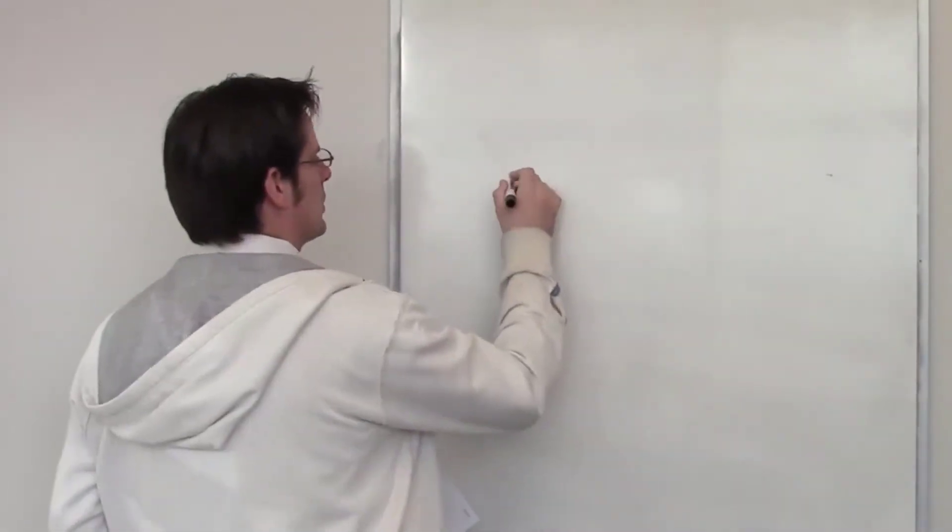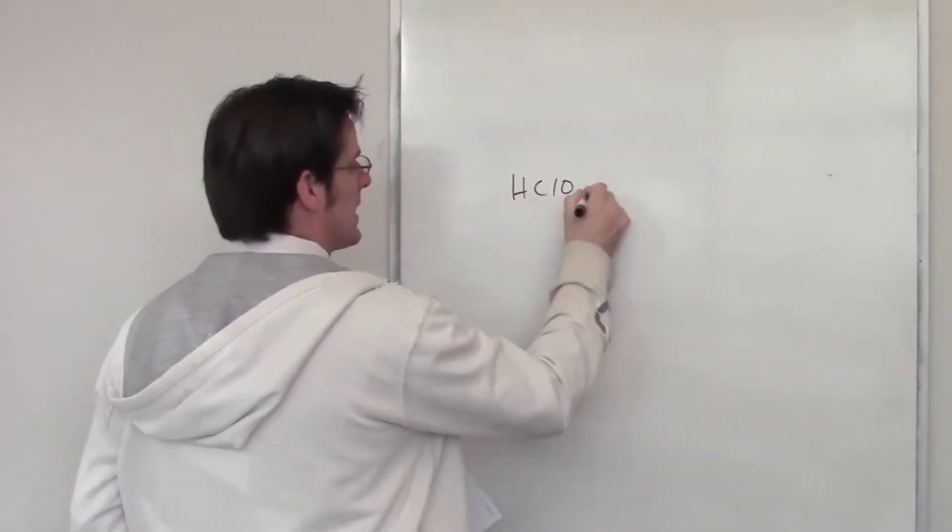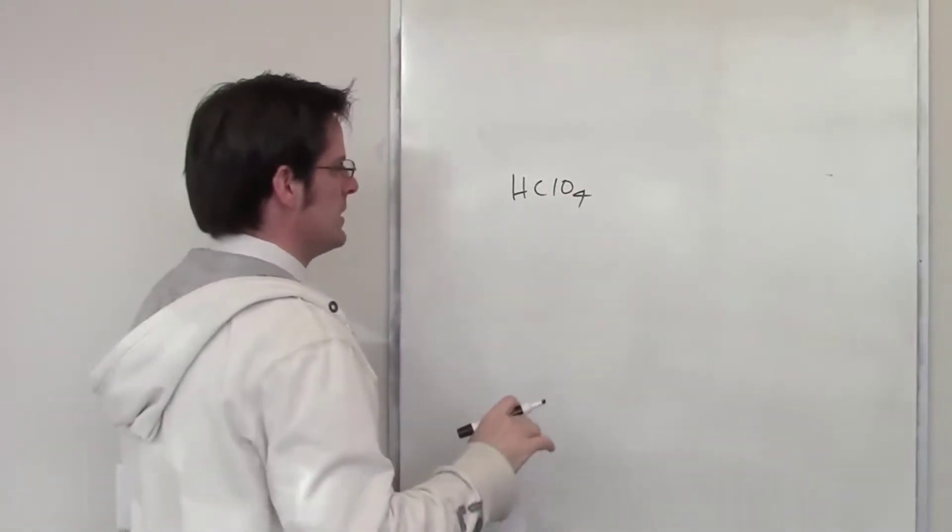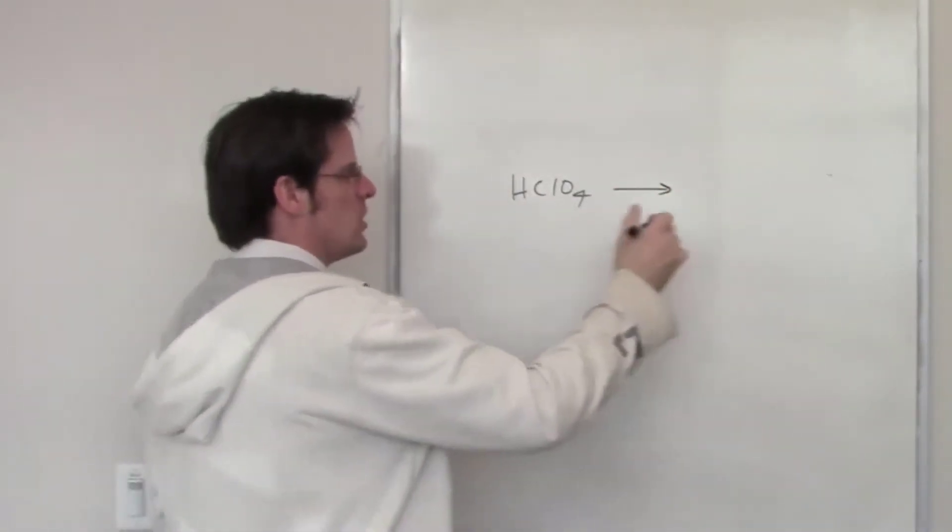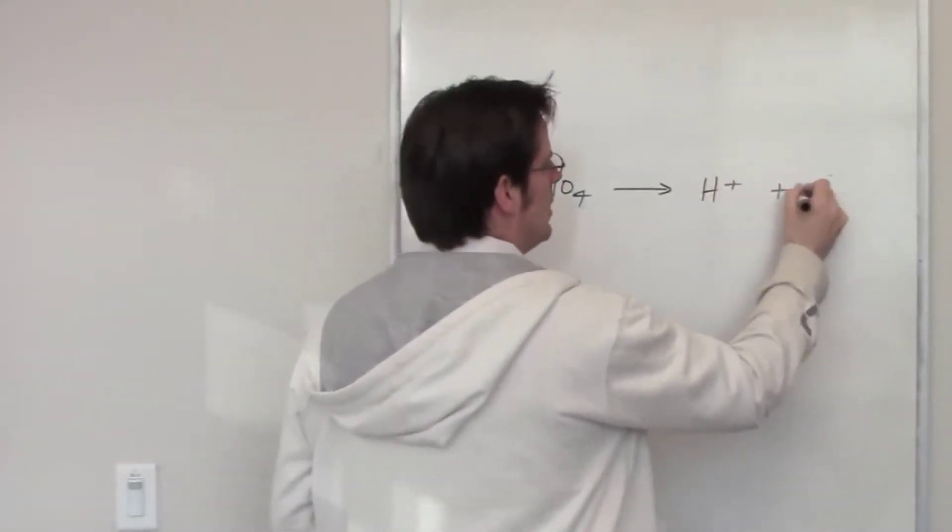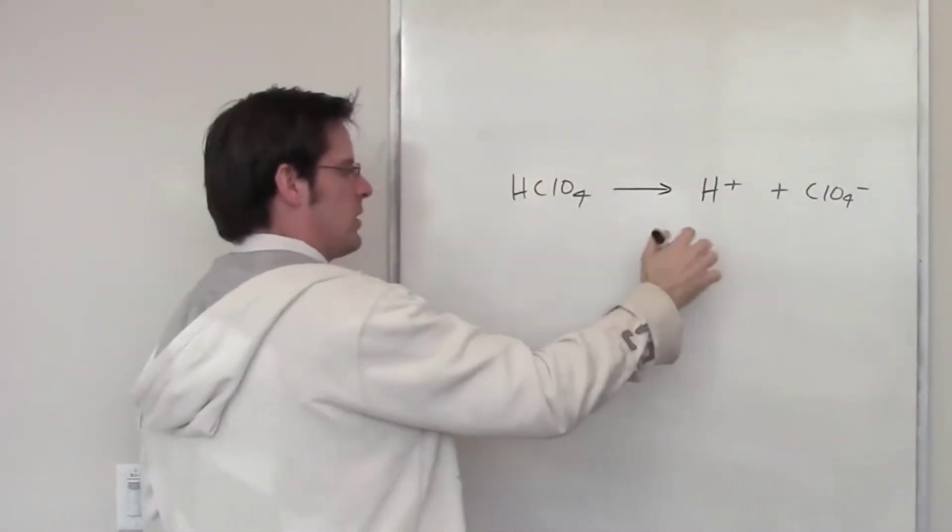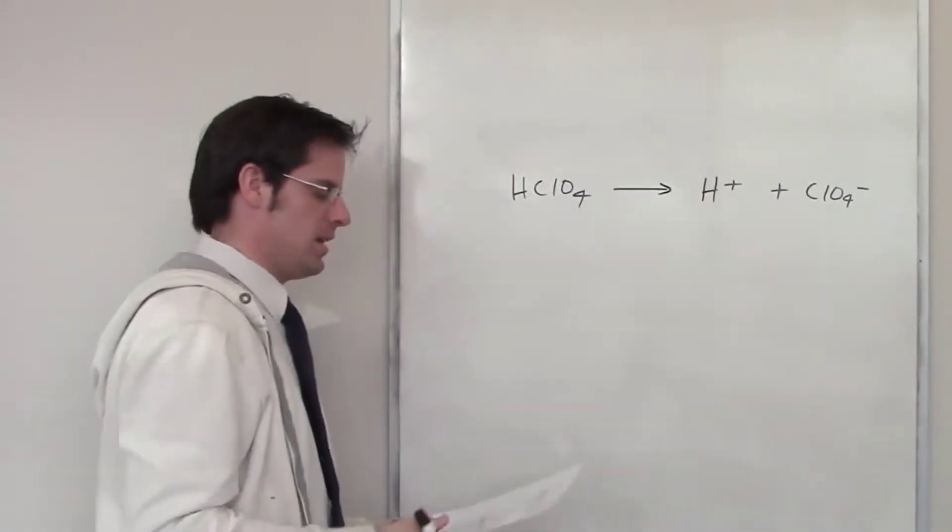This question is asking about perchloric acid, which is one of the strong acids I require you and my students to memorize. Perchloric acid, because it's a strong acid, dissociates in a virtually one-way arrow, so I don't have an equilibrium arrow here to form H+ and ClO4 minus.